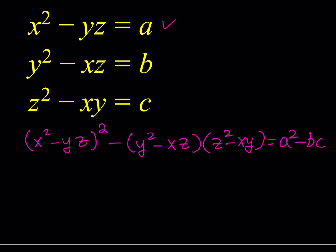Notice that the first equation is X squared minus YZ, and our result here is A squared minus BC, so there seems to be some type of relationship between those things. Moreover, notice that Y squared Z squared cancels out right away. The resulting equation is going to be nice, and we'll see why in a little bit. Let me go ahead and expand this to show you what it looks like, and then hopefully we can generalize.